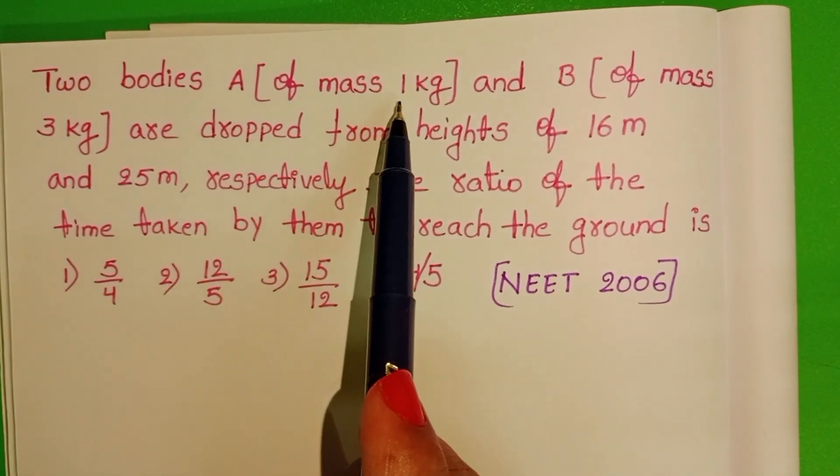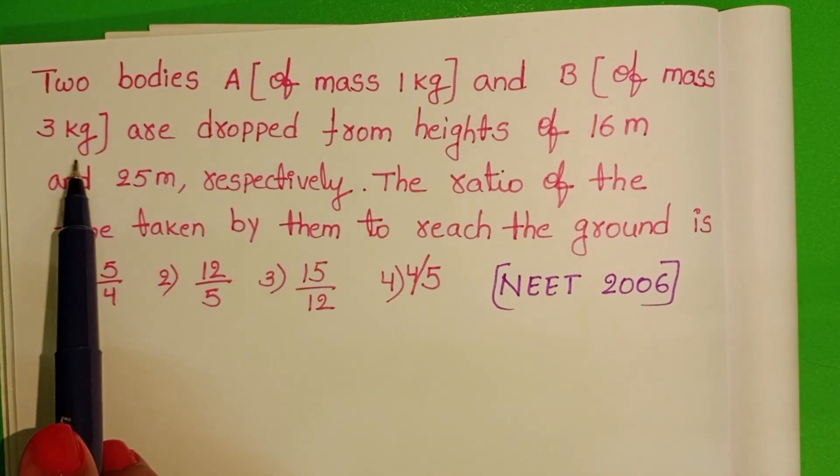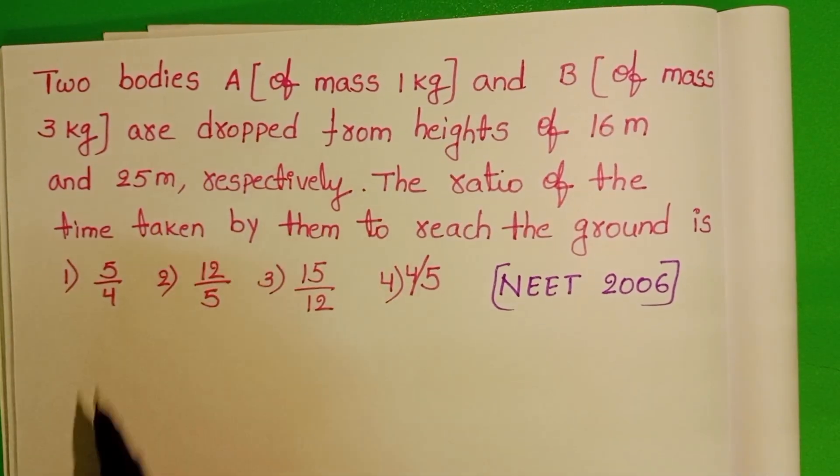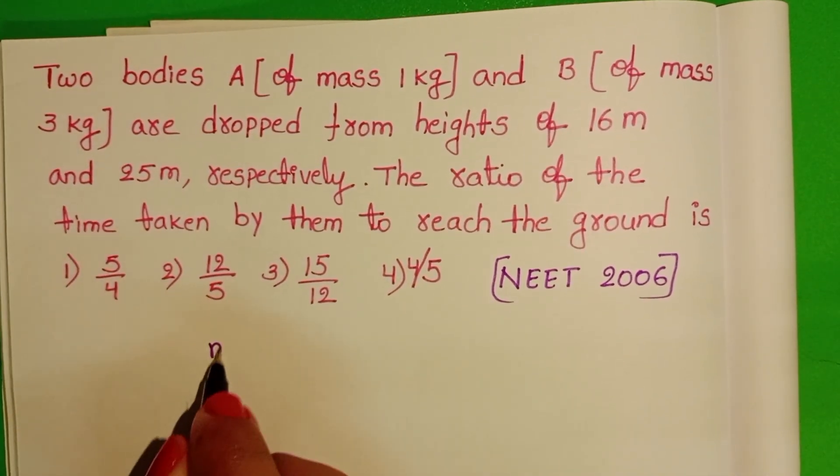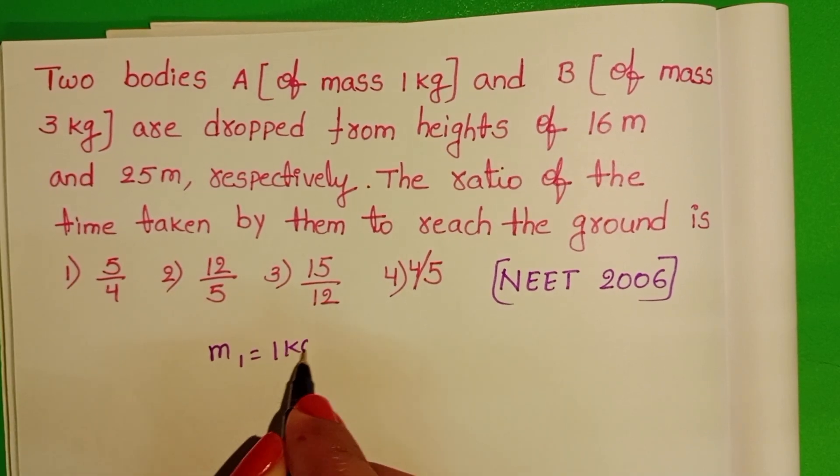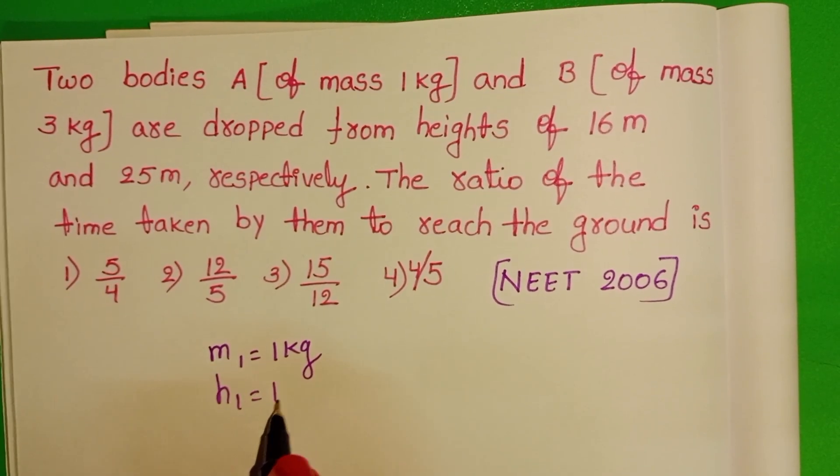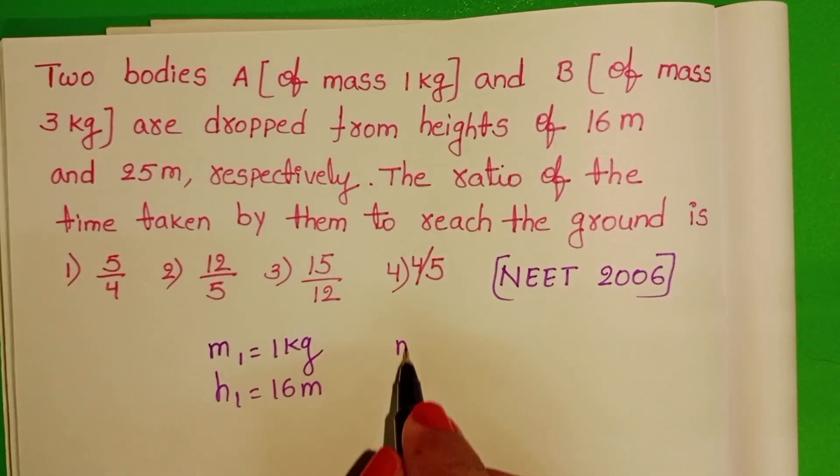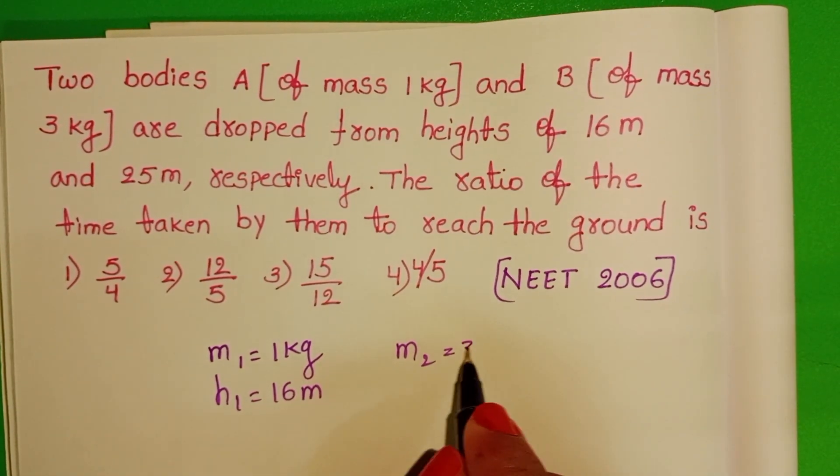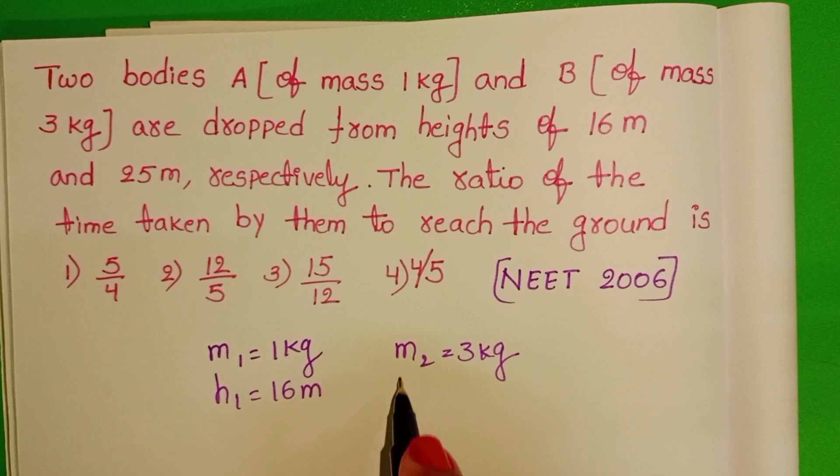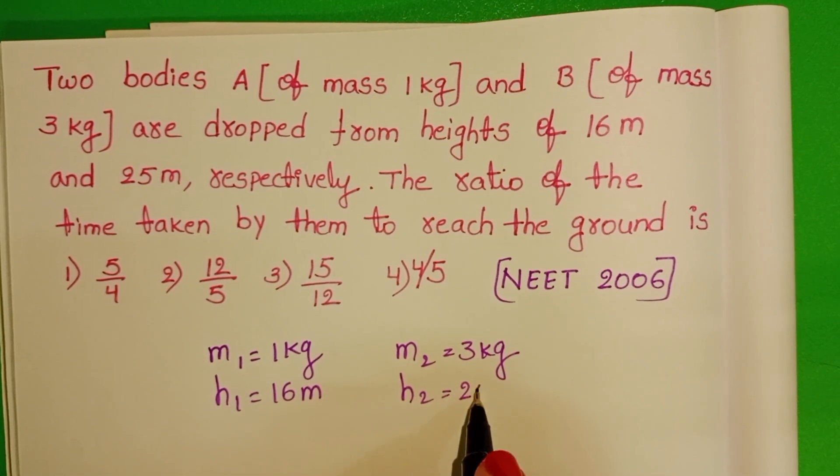Mass of the first body is 1 kg and mass of the second body is 3 kg. First body is dropped from a height of 16 meters, so H1 equals 16. Second body of mass 3 kg is dropped from a height of 25 meters, H2 equals 25.